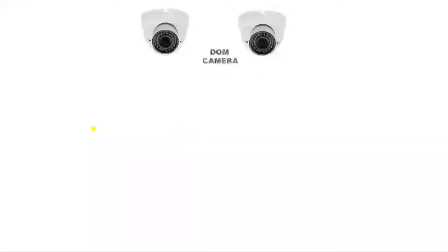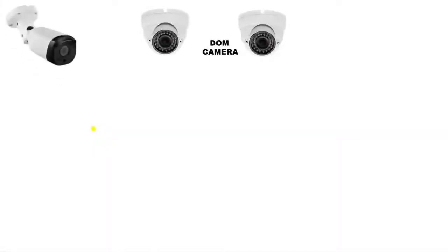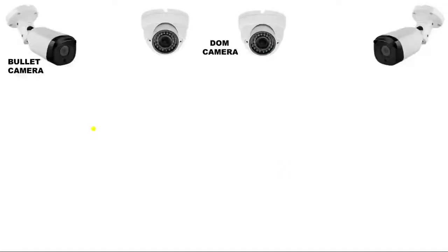Normally we have two types of CCTV camera. The first type is a dome camera, which is normally installed in the indoor unit of a house. And the bullet camera is normally installed in the outdoor unit. So in outdoor we connect a bullet camera, and indoors we connect a dome camera.